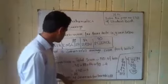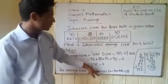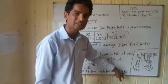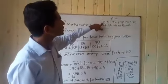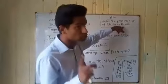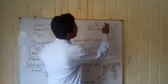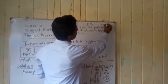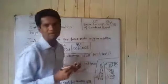So the average score of Jahandib for four tests is 88. Got it? This is your homework: page number 172 of the student book, question number 1. Thank you.